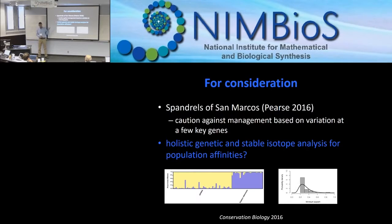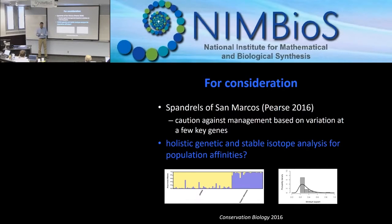I'm not suggesting that showing a table of genes potentially under selection implies particular importance for management scenarios. This is a retake of the Gould and Lewontin paper on the spandrels of San Marcos — whenever we do an assay like this and find genes under selection, this is such a tiny proportion of the genome that we shouldn't be trying to manage for variation at this small proportion of genes.